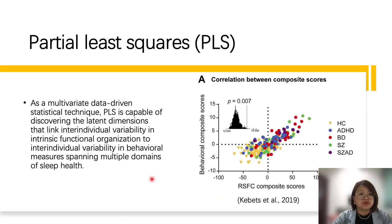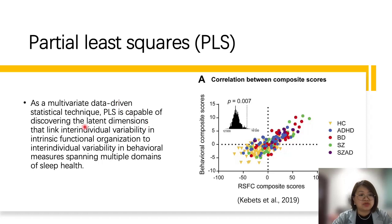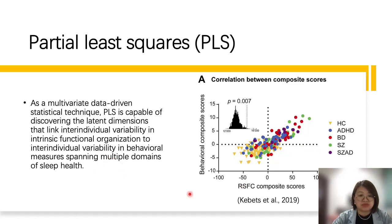As mentioned earlier, we used Partial Least Squares to seek the multivariate covariance between the sleep health domains and resting-state functional connectivity. As a multivariate data-driven statistical technique, PLS is capable of discovering latent dimensions that link inter-individual variability in intrinsic functional organization to inter-individual variability in behaviors spanning multiple domains of sleep health.